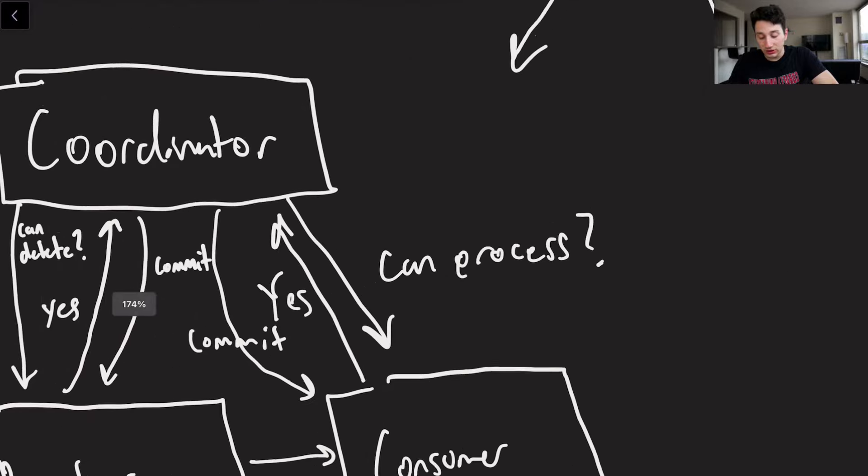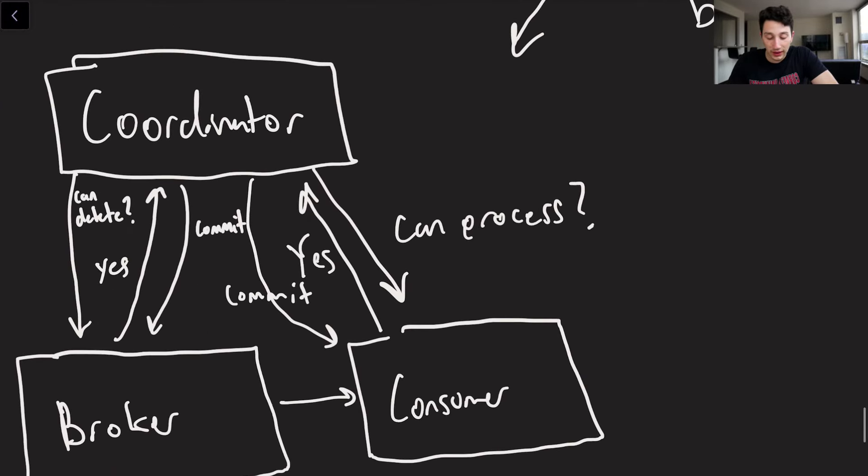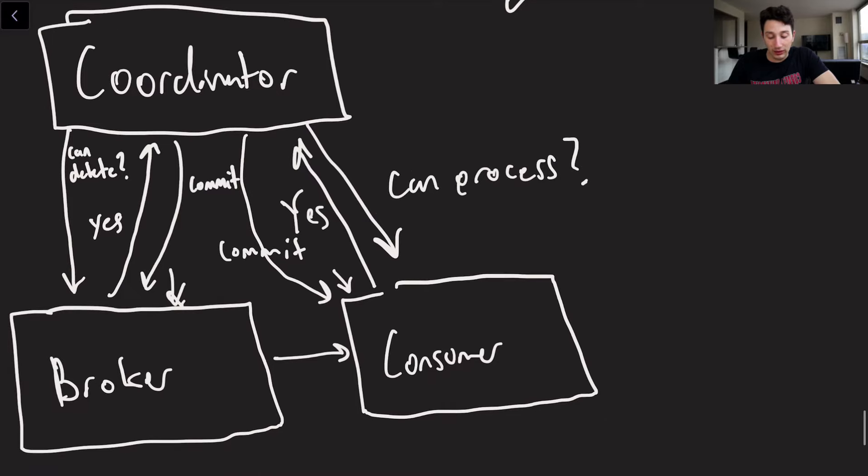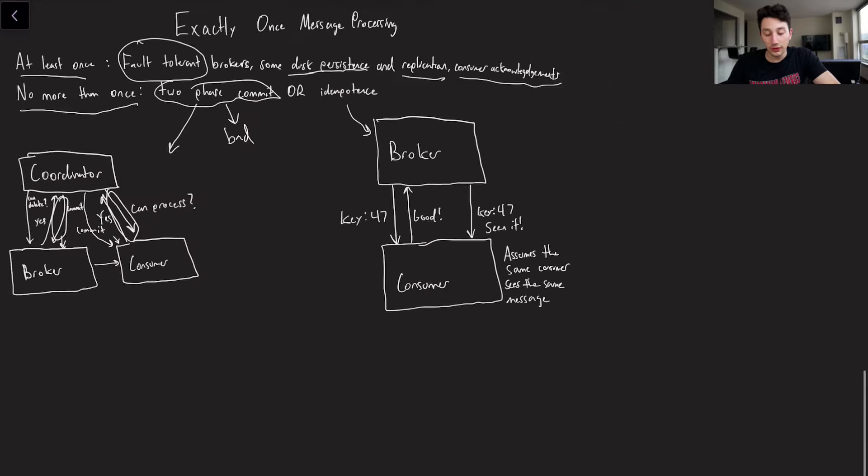Well, just quickly zooming in, we would have a coordinator node, which at the same time reaches out both to the consumer right over here and the broker. It says to the broker, hey, can you delete this message? Are you good to do that? Will it break anything if you delete it? The broker will probably say, yes, I'm fine doing that. And then it'll also say to the consumer, hey, are you able to handle this message? And if so, are you ready to commit it? Now, if both of these systems say yes, then the coordinator can reach back out to them and say, go ahead and actually commit that. You're good to go. Of course, two-phase commit always very slow and we avoid it when possible,